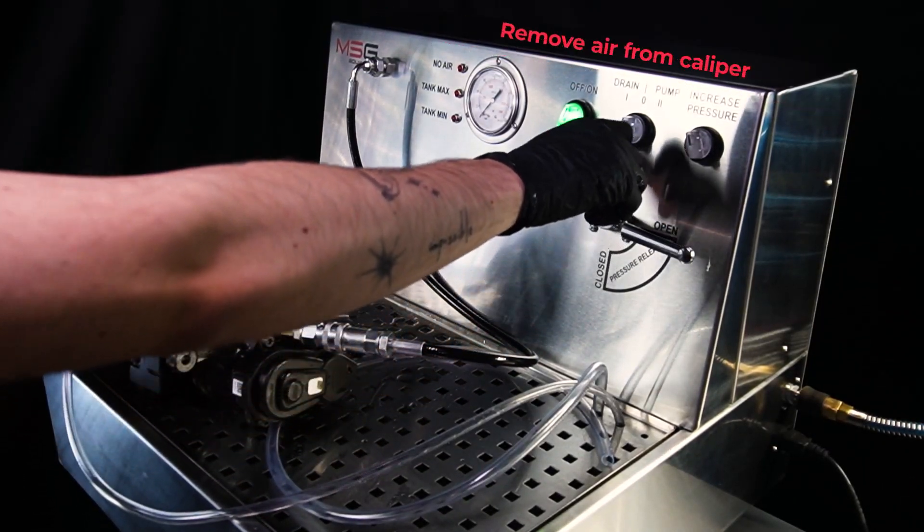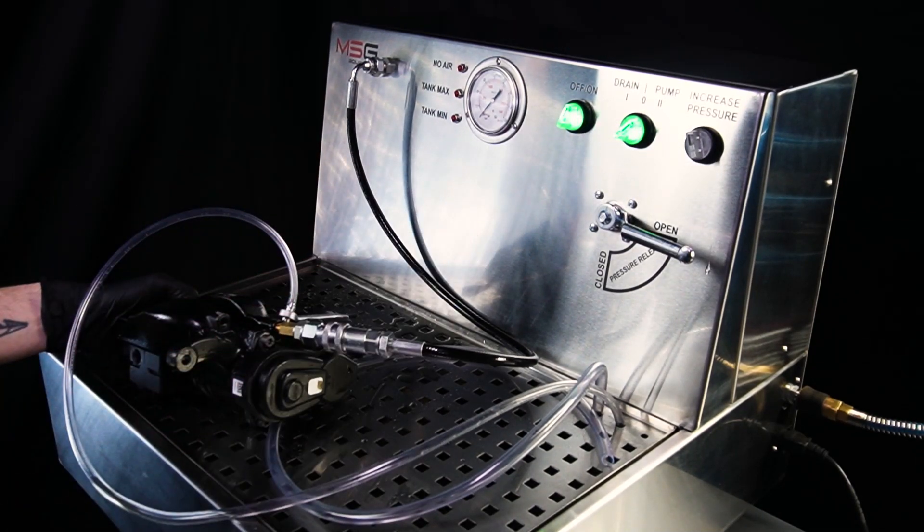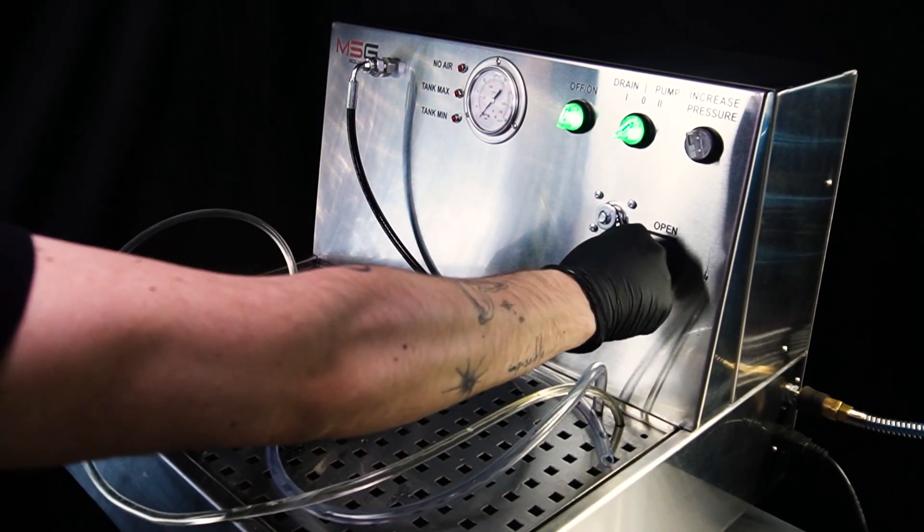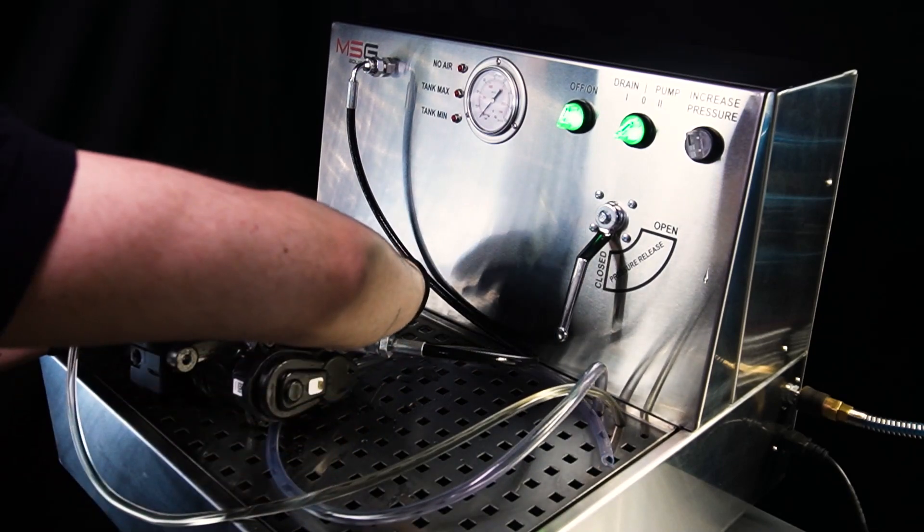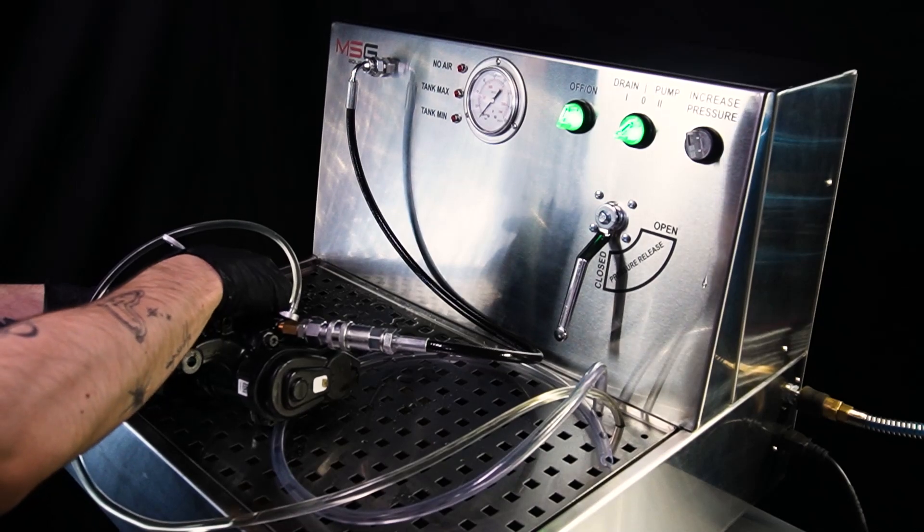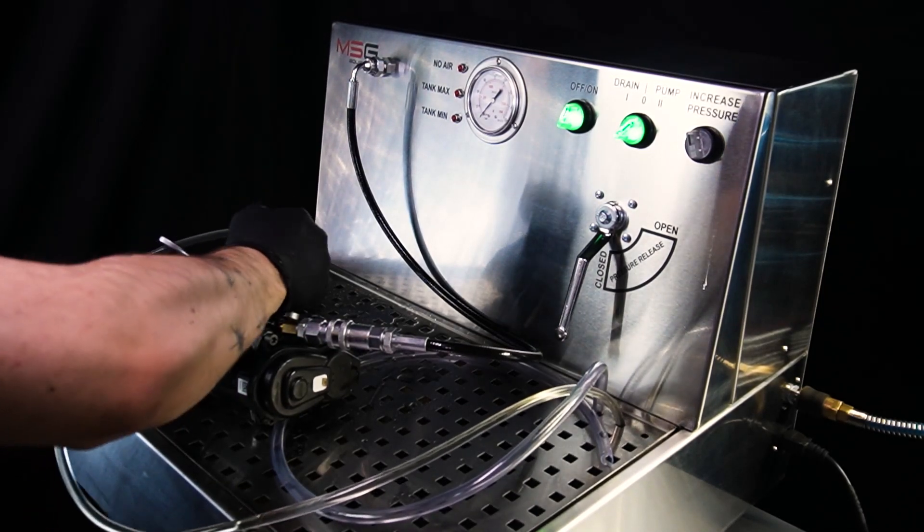When fluid starts to flow through the tube, close the pressure lift up. As soon as air stops flowing through the tube, tighten the pump fitting on the caliper and remove the tube.